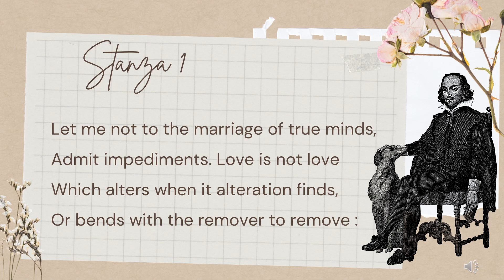Shakespeare popularized this sonnet pattern so much that now it is known after his name — it is called the English sonnet or Shakespearean sonnet. So in this sonnet, as I told you, there are three quatrains and one couplet. Three quatrains means twelve lines, and one couplet of two lines makes it a poem of fourteen lines.